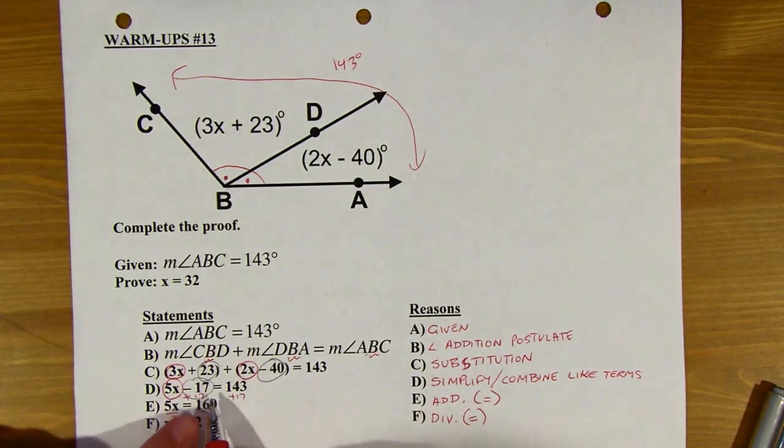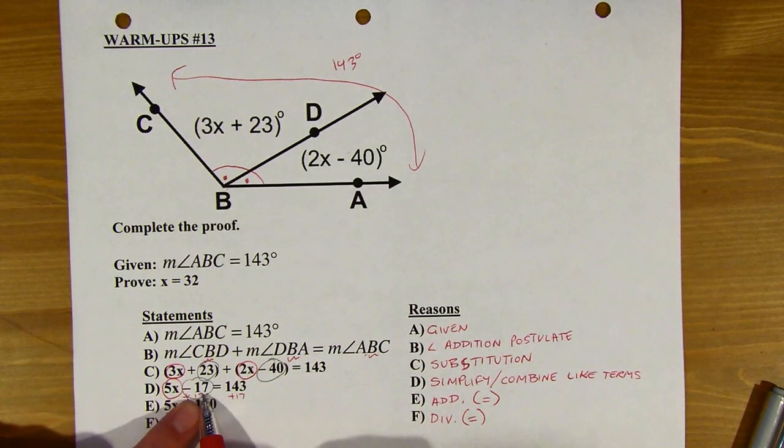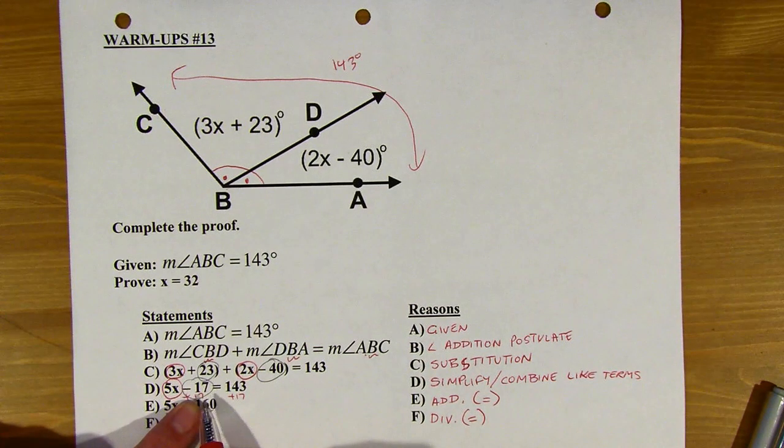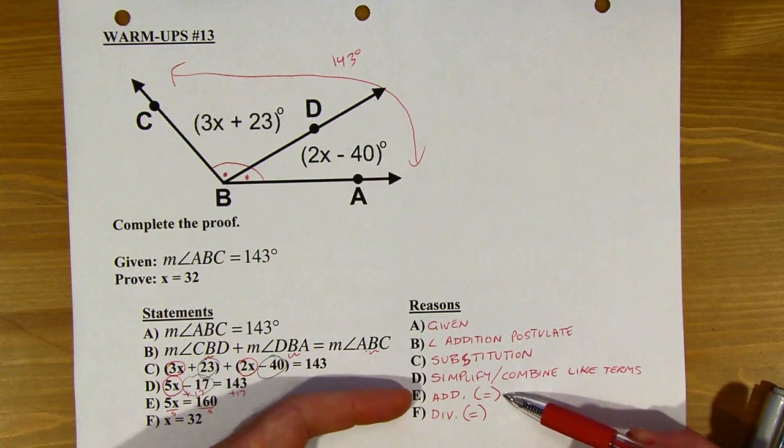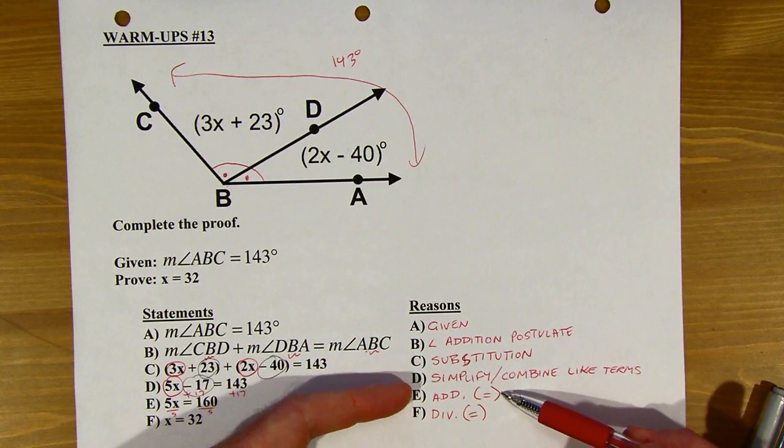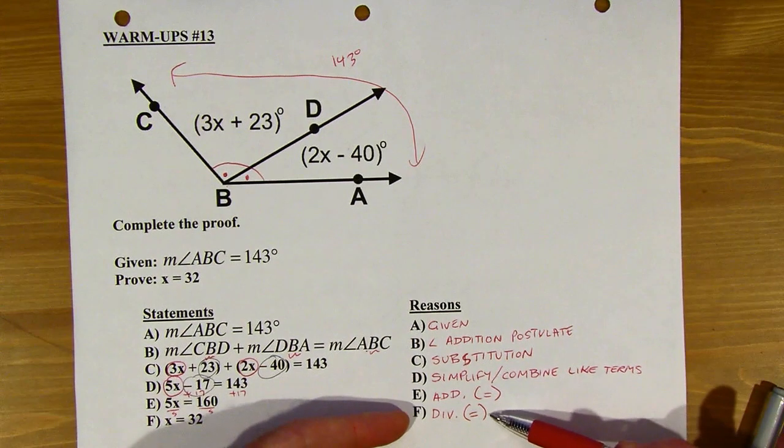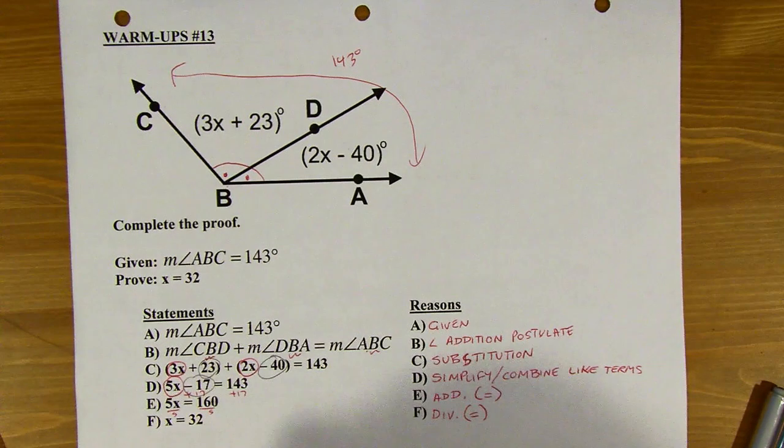Same thing with the addition step. You could have said, well, I subtracted negative 17 instead of adding positive 17, because that would be the same thing. So addition and subtraction are technically interchangeable. Division property and multiplication ones are also interchangeable. Okay, that's it for today.